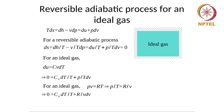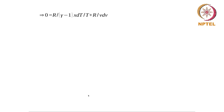For an ideal gas, Cp - Cv = R. We know that Cv = R/(γ-1) and Cp = γR/(γ-1). So we can replace Cv with R/(γ-1). This gives us R/(γ-1) · dT/T + (R/V) · dV = 0, where dV is in the numerator and V is in the denominator.